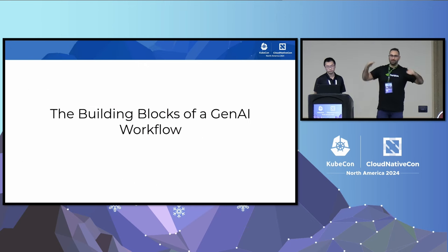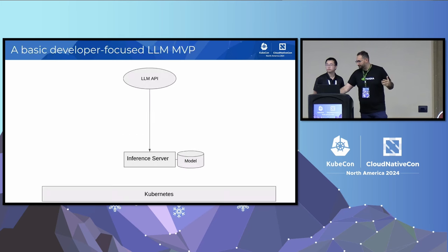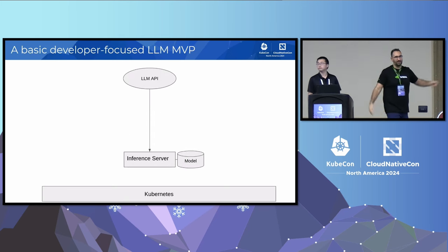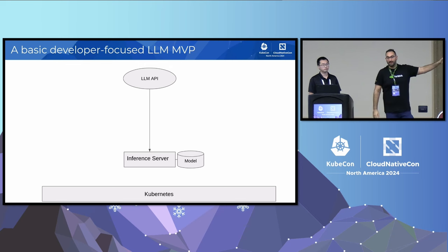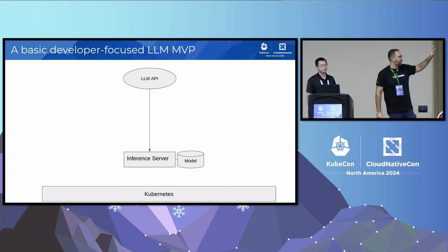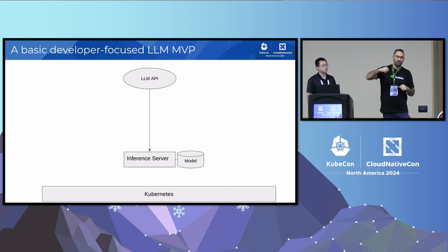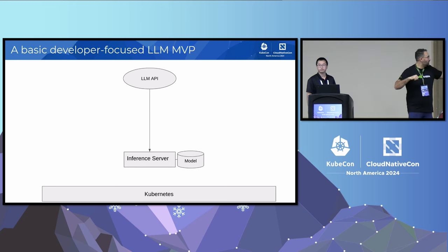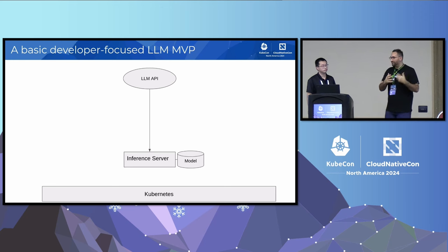Now that we're on the same page on the fundamentals, let's walk through the building blocks. Where we all started was something like an API — everyone's used ChatGPT, which is running somewhere else that someone else manages. The next step is you do Docker run or OLLAMA, which brings up a container with an LLM locally. This is really a toy so you can play around with it — not even quite an MVP, just something to get a feel for how an LLM works.